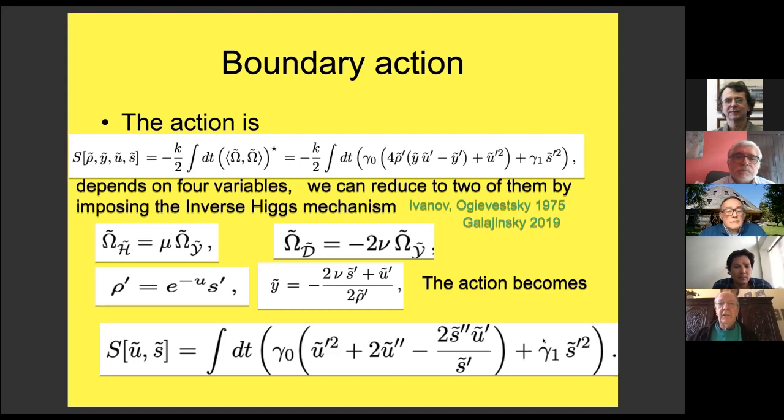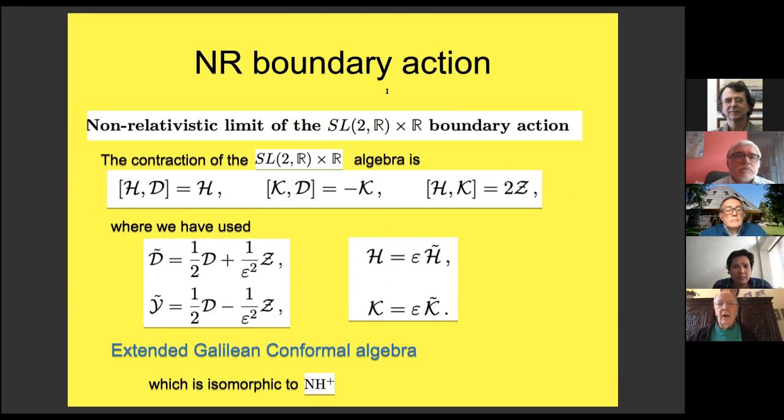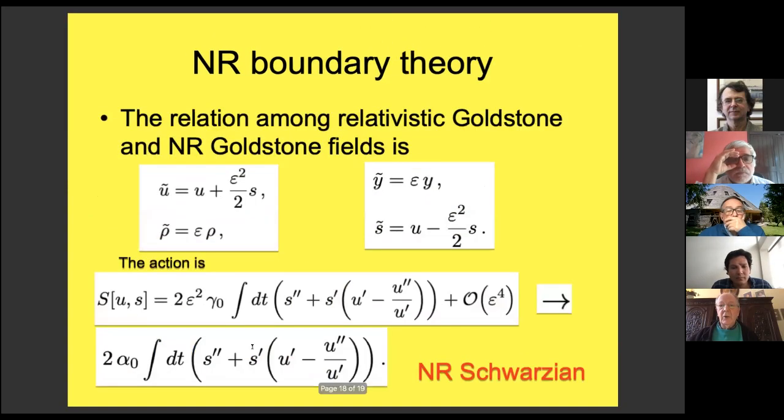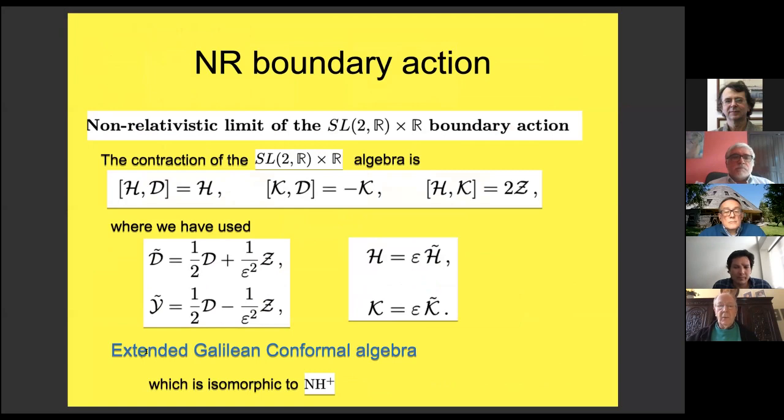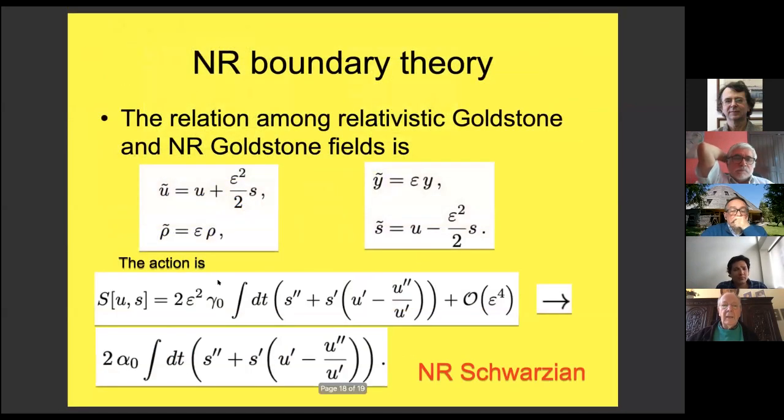The boundary action now for the non-relativistic case we should take the contraction of sl(2,R) cross R. Here is some definition of the contraction and we can check that this is the standard conformal algebra that is isomorphic to what we call extended Galilean conformal algebra where you see here appears some central extension. In the case of the ordinary conformal algebra here appears the d.